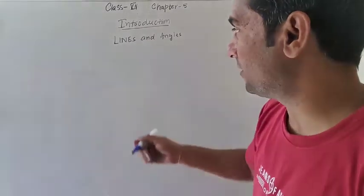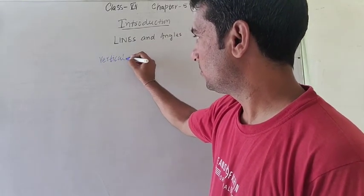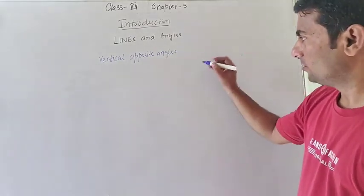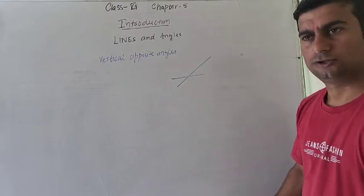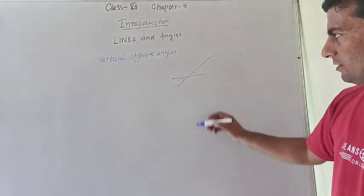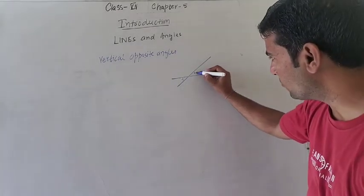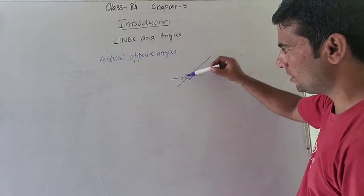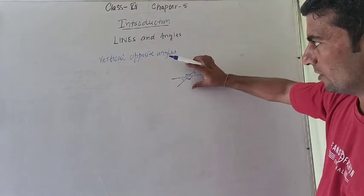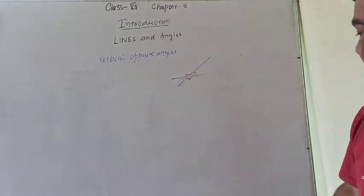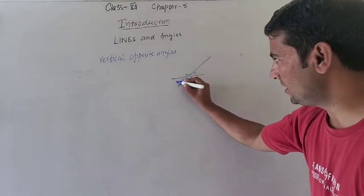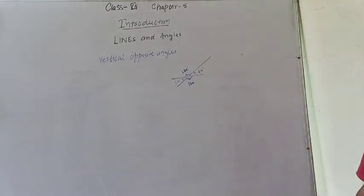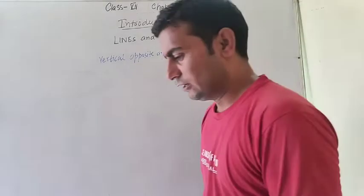Next is vertical opposite angles. When two straight lines intersect each other, the two opposite angles formed are called vertical opposite angles. They are equal to each other. For example, if one angle is 60 degrees, the vertical opposite angle is also 60 degrees, and the other pair would be 120 degrees each.